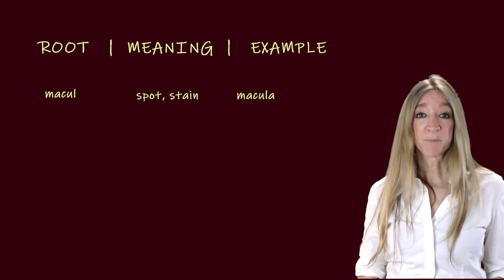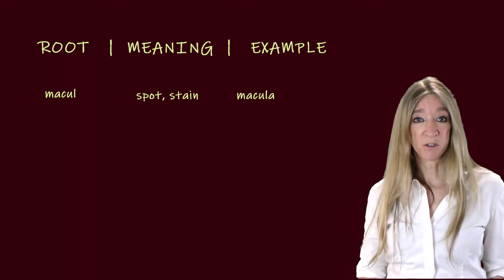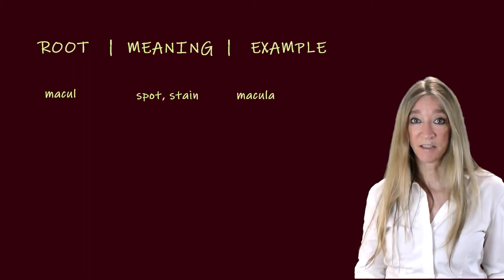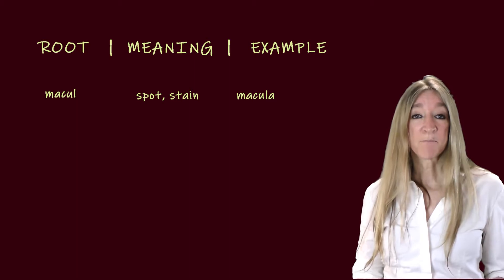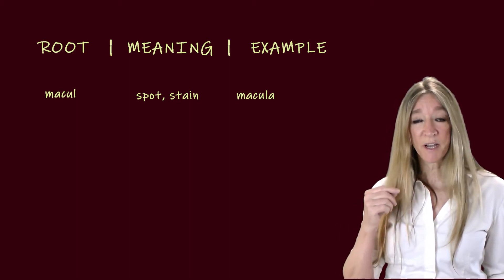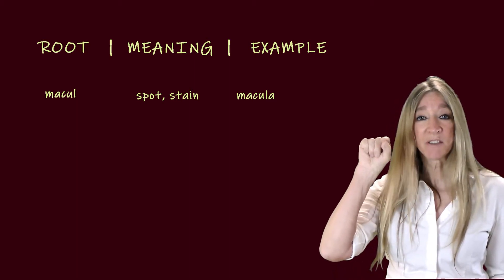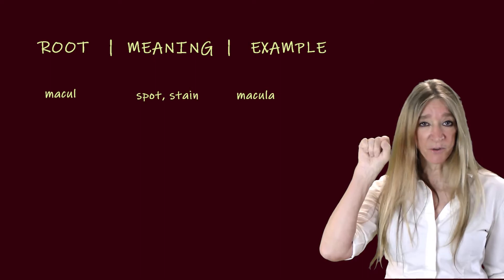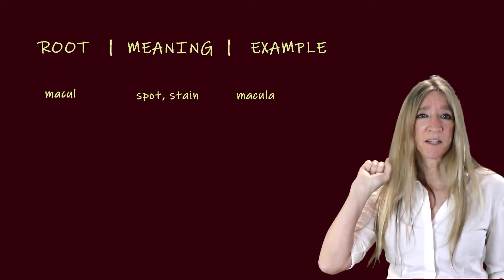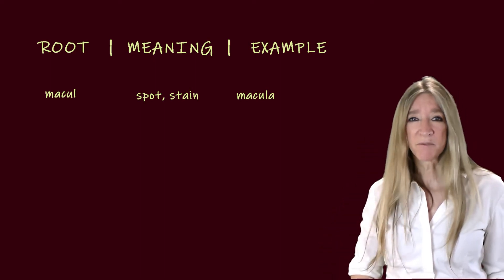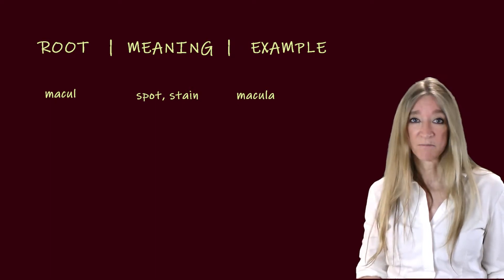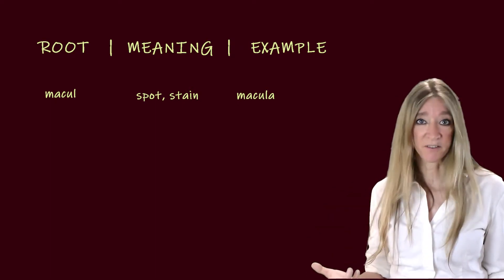The next root, macule, meaning spot or stain. The macula is a part of the eye on the retina that actually looks like a little dark spot or stain. An example from real life is the word immaculate, meaning spotless.